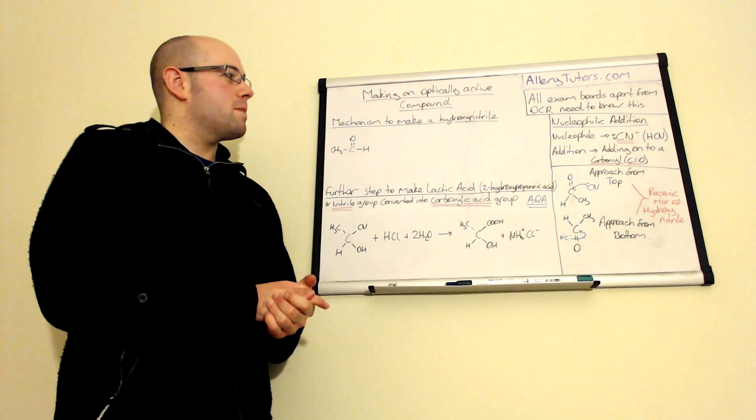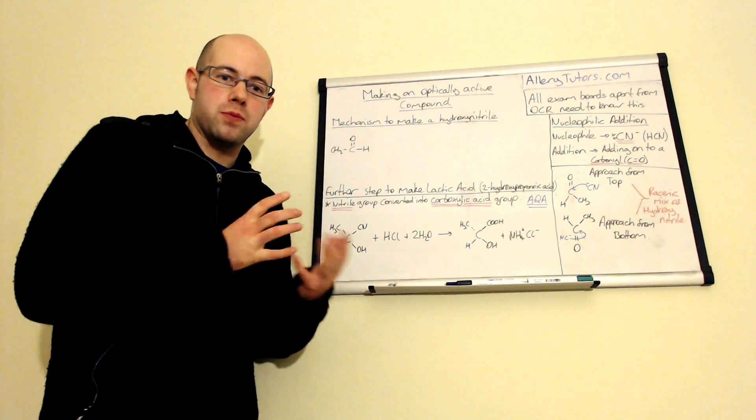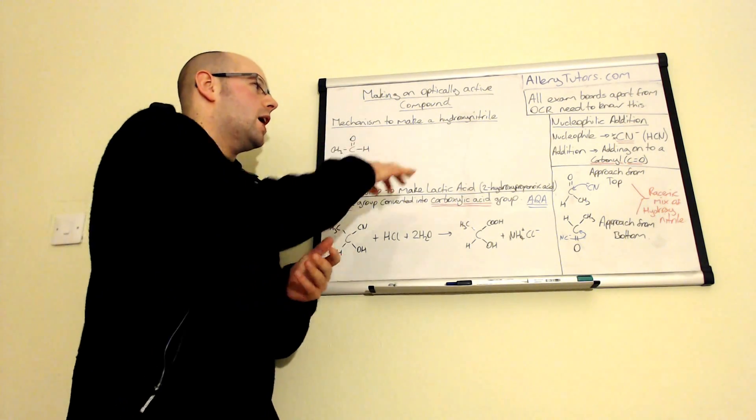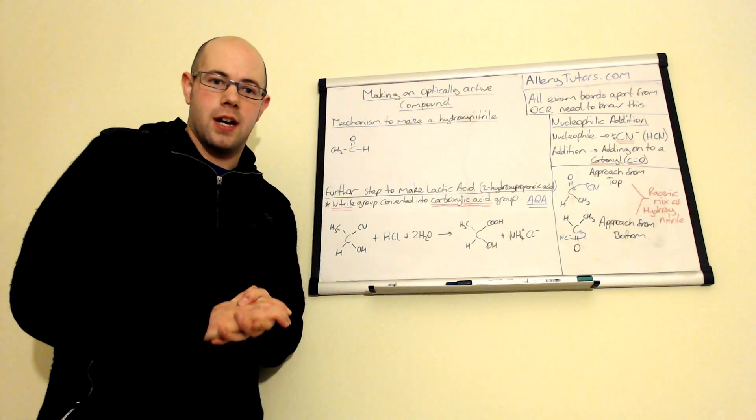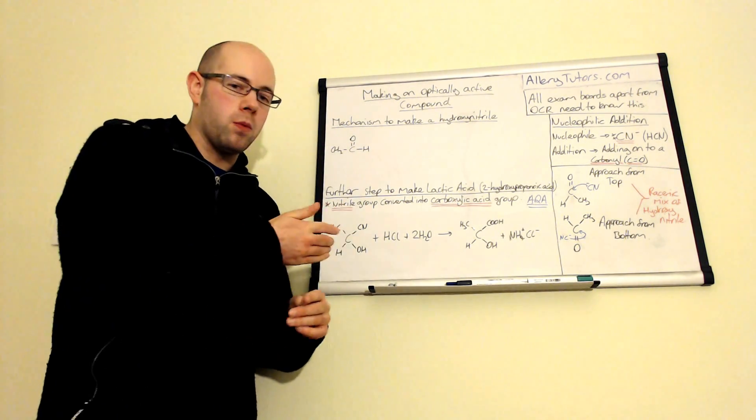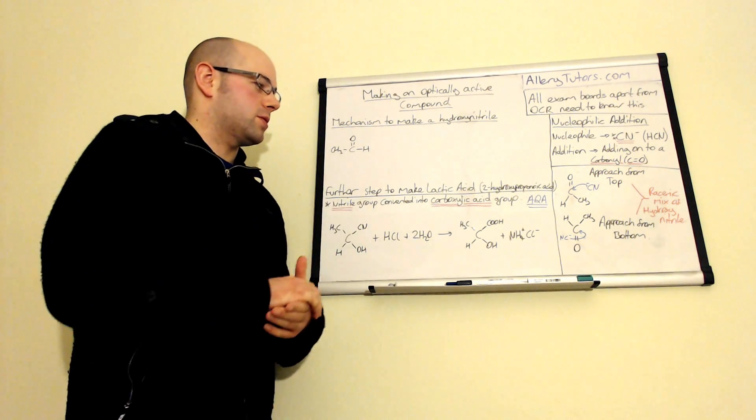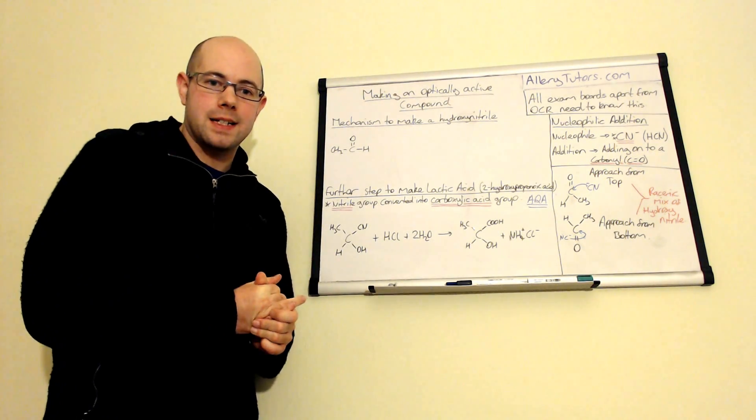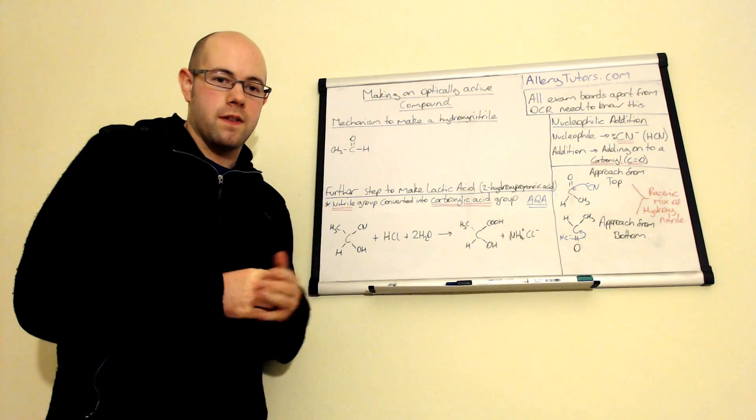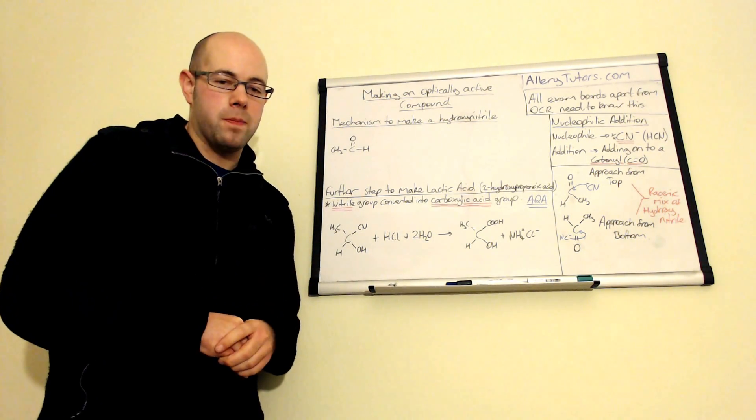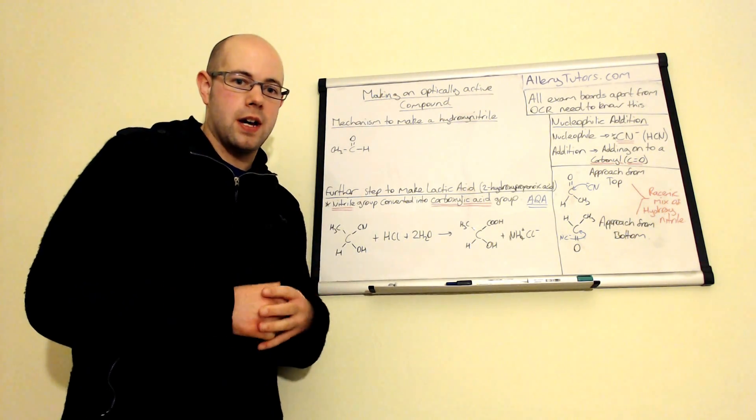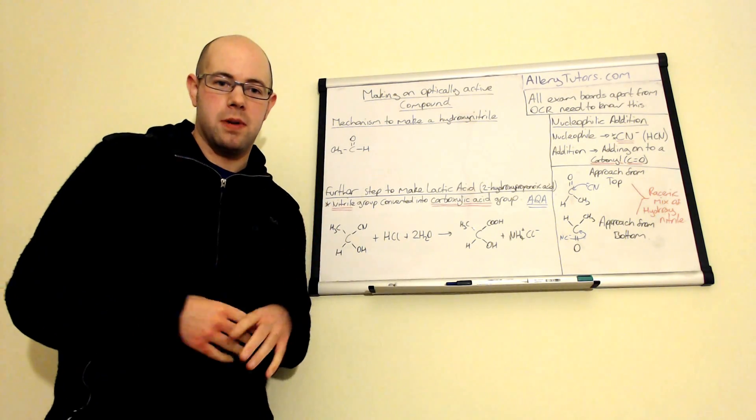So we're going to show you how you can make something called a hydroxynitrile and then we're going to take it one step further for those people who do AQA to show you how you can make lactic acid and we're going to look at the effect on optically active compounds in medicines as well and in certain drugs, for example thalidomide.